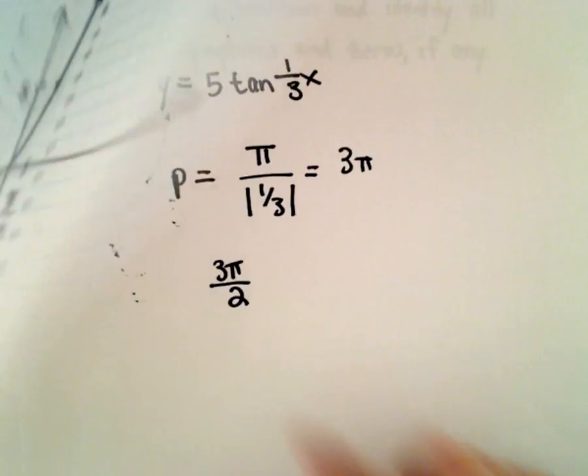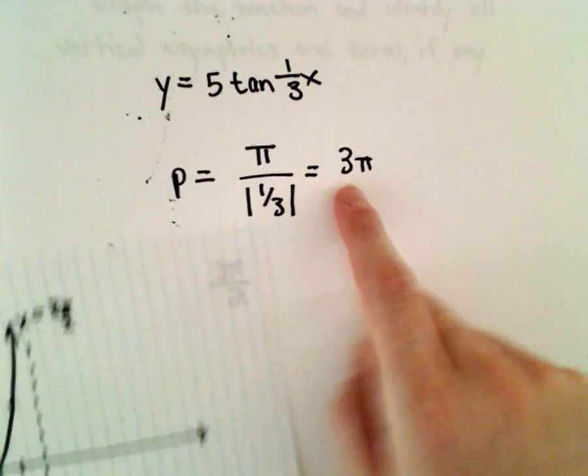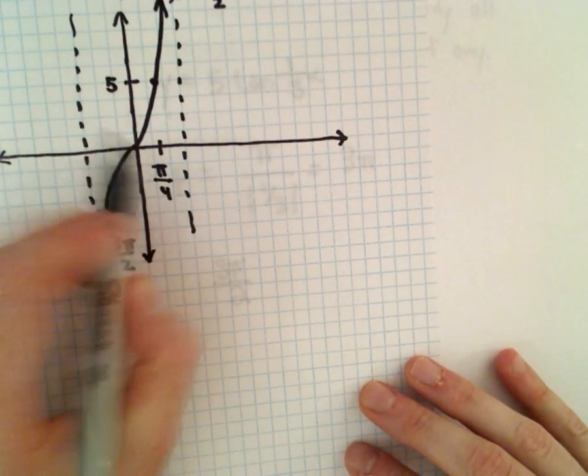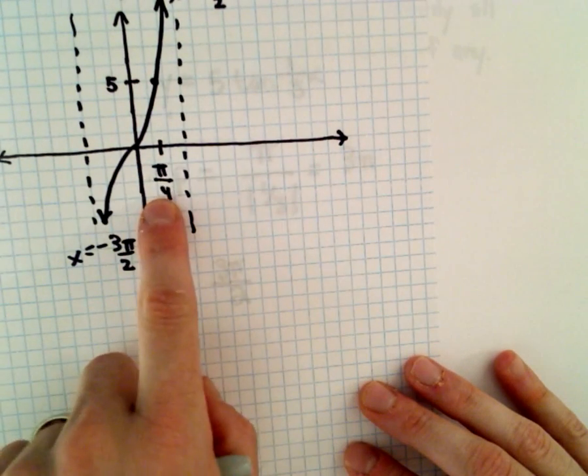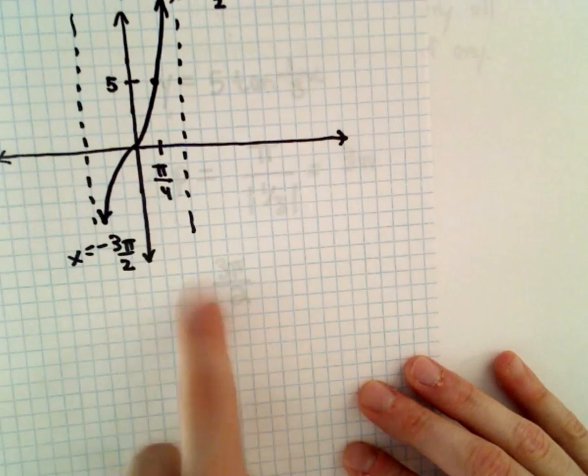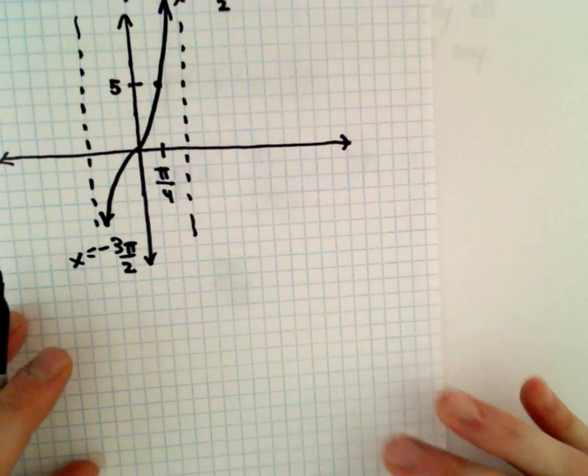So again, we said the period in this case is equal to three pi. Again, certainly not to scale, right? Here's pi over four, and my vertical asymptote's already over here at three pi over two.